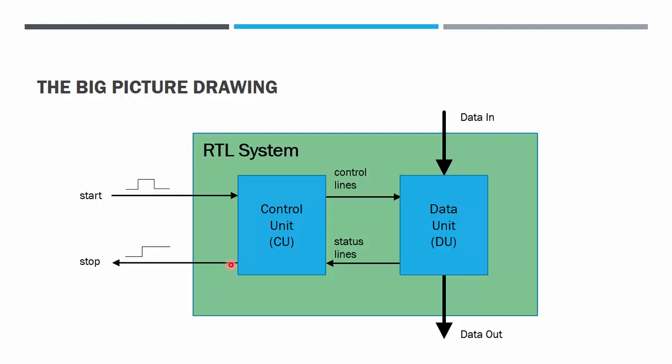So, this is the big picture of the RTL system and most of our job will be to design what is in the Control Unit as finite state machine. And what is inside in Data Unit is the Data Path system.